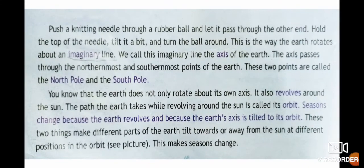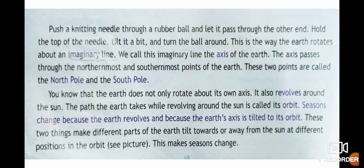The earth does not only rotate about its own axis — it also revolves around the sun. The path the earth takes while revolving around the sun is called its orbit. Seasons change because the earth revolves and because the earth's axis is tilted to its orbit. These two things make different parts of the earth tilt towards or away from the sun at different positions in the orbit, and this makes seasons change.